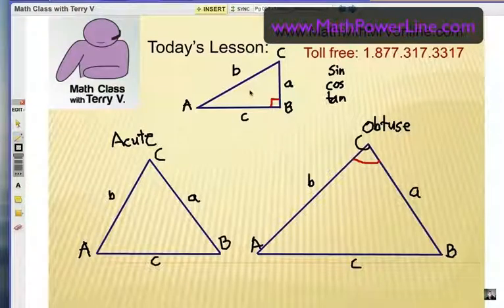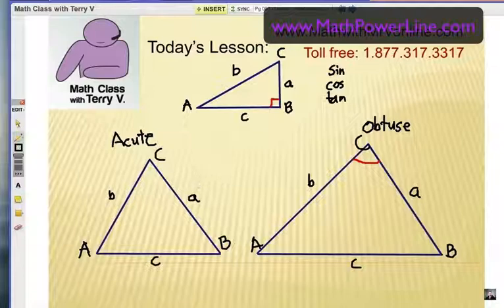Right triangles is a different way to find the missing parts, the angles and the sides of a triangle, and that's called solving a triangle. But we're going to be focusing on these kinds of triangles, non-right triangles.